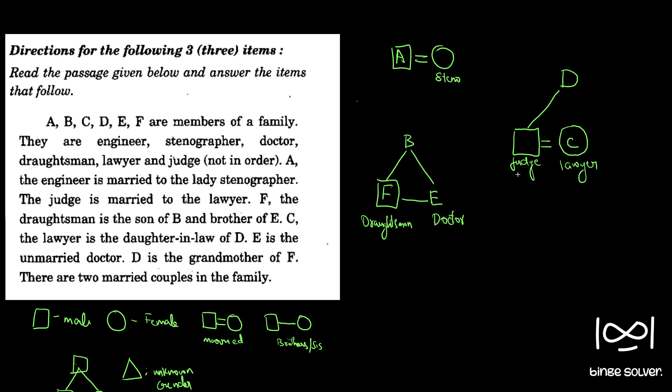D is the grandmother of F. Since this is a family, grandmother of F means F is this, and this has to be there. And this becomes B now. This is the grandmother, so this is a circle. Now there are only two married couples in the family. This is one married couple and this is another, so the only possibility is like this.